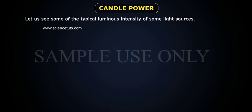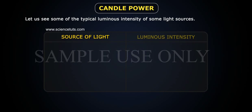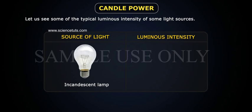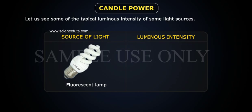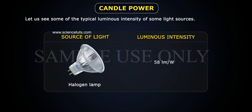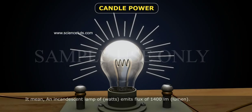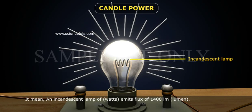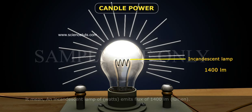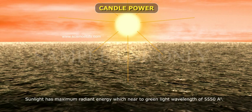Let's look at some typical luminous intensity values for common light sources. An incandescent lamp produces 14 lumens per watt, a fluorescent lamp produces 43 lumens per watt, and a halogen lamp produces 58 lumens per watt. This means an incandescent lamp of 100 watts emits a flux of 1400 lumens. Other light sources are expressed similarly.